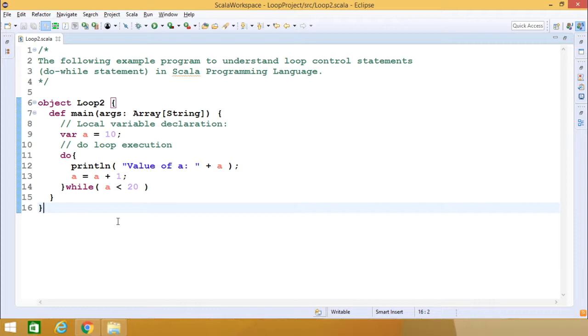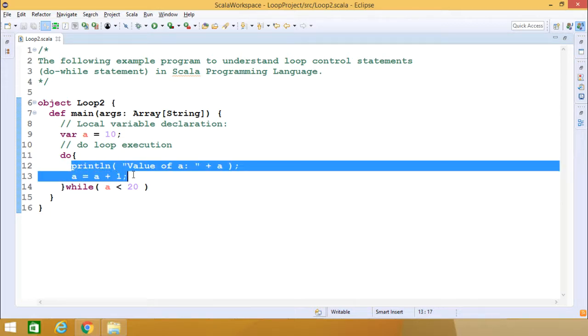We are having this idea that in case of while loop, if the condition is false initially then obviously the loop body will not get executed. But in case of do-while, at least once this respective body will get executed.